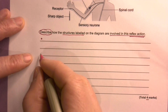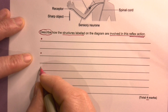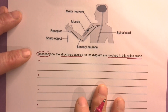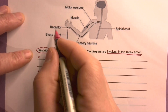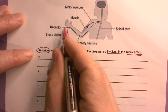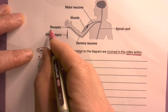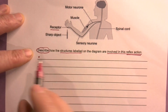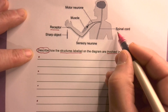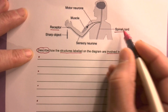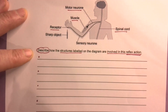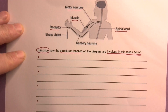It's a four-point answer. So first thing is, I'm going to start here. We've got these are the structures labelled: one, two, three, four. So I'm going to put them in that order.